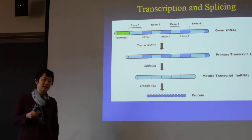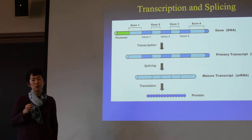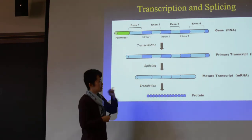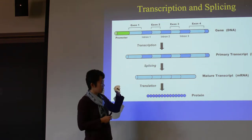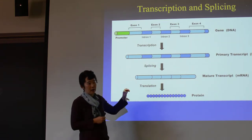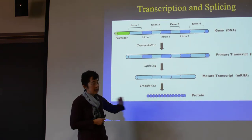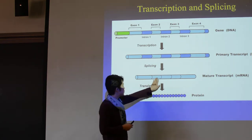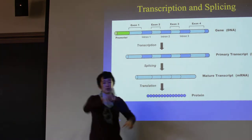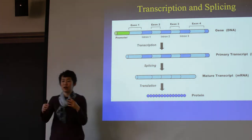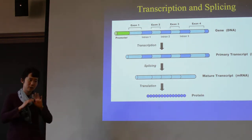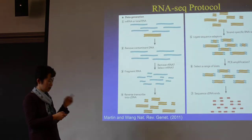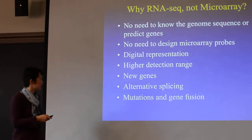In the early days, array companies like Affymetrix tried to use probes targeting exons — there was an array called the exon array. Anything in the genome that remotely looked like an exon, Affymetrix would put more probes there, trying to look at probe signal to figure out alternative splicing. But it was really, really hard. So now with sequencing, you can actually look at this much, much better.